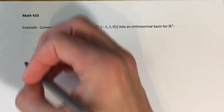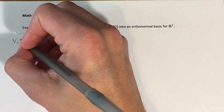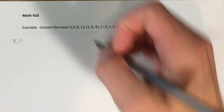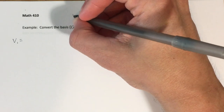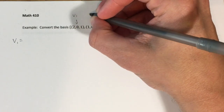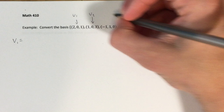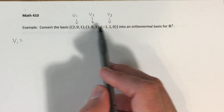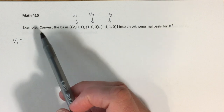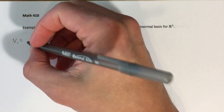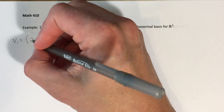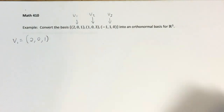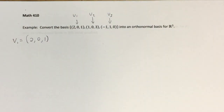Step one is to define V1 to be the first vector in the set. In the way that we outlined the steps for the Gram-Schmidt process, I would be calling this U1, U2, and U3. So the first step is to define V1 to be U1, or in this case (2, 0, 1). That's your freebie — you get that one automatically.